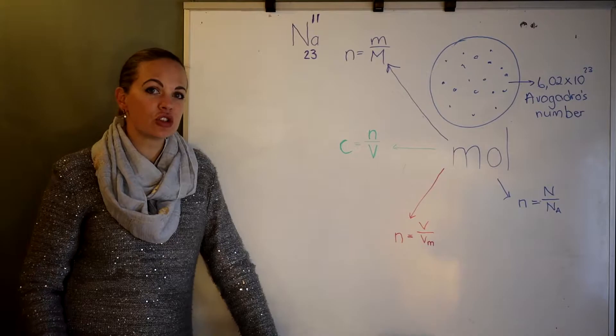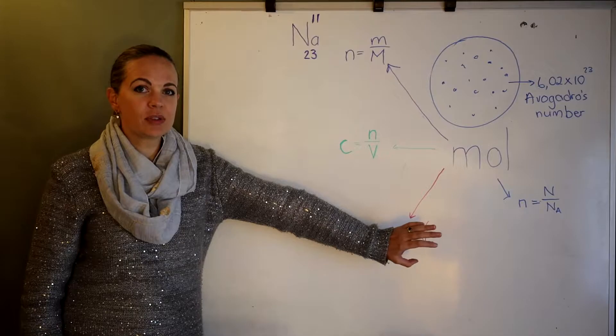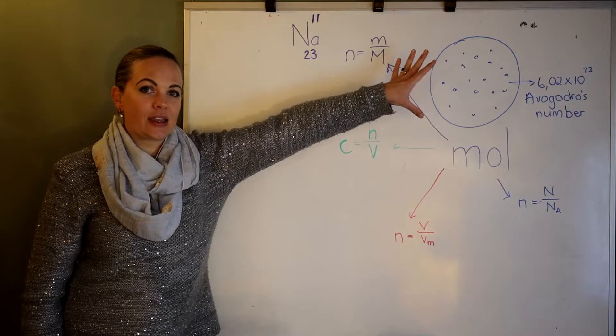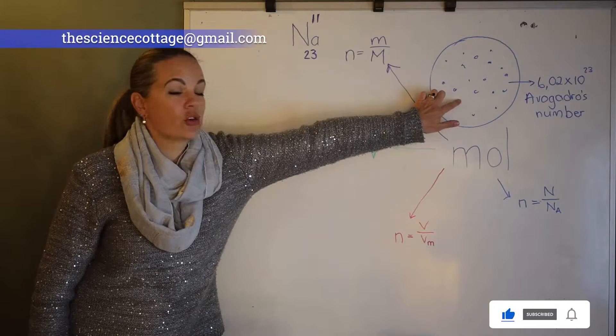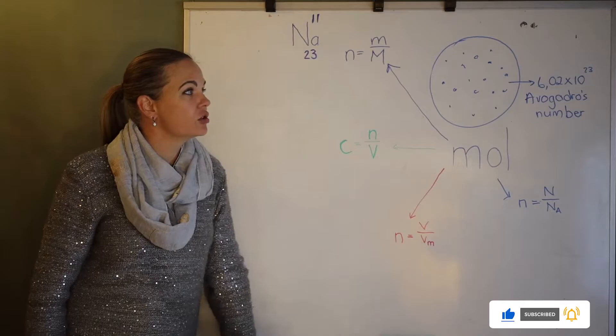We usually use a mole to refer to ions, atoms, molecules, or electrons. The number of particles or units in one mole is just much larger than a dozen. It's 6.02 times 10 to the power 23 of anything, and that's also called Avogadro's number of units.